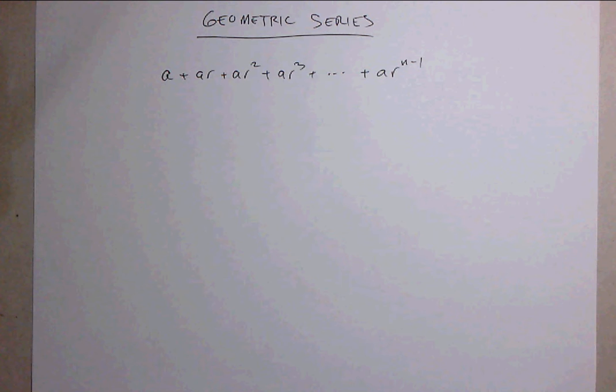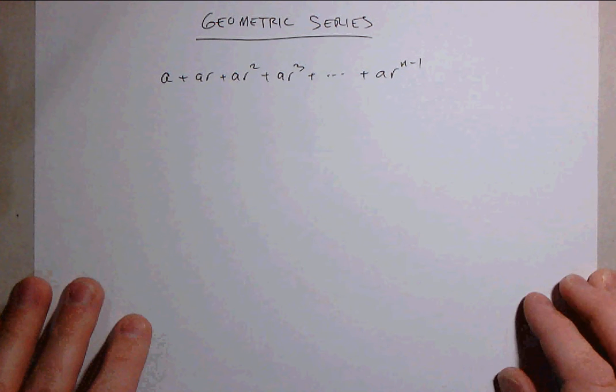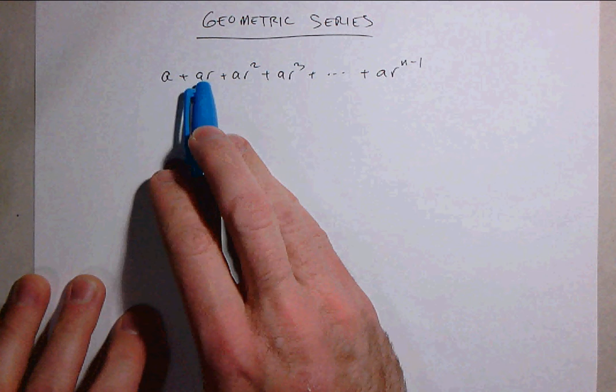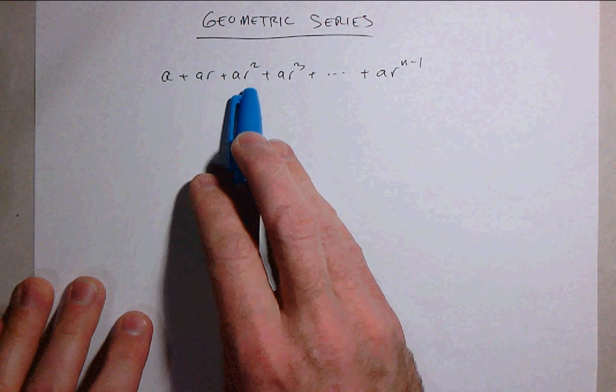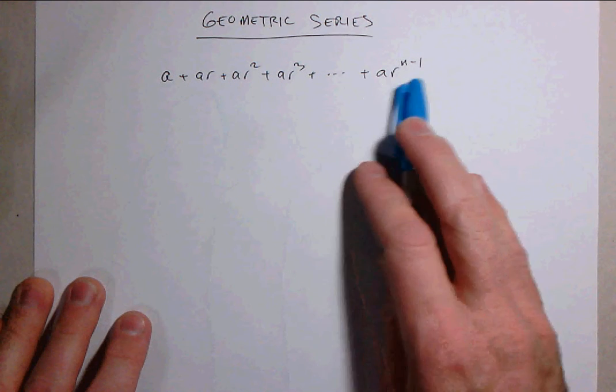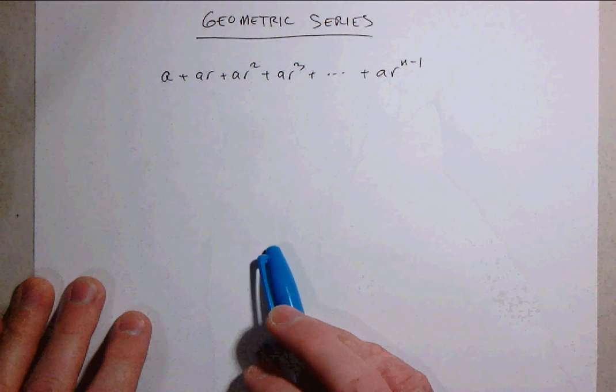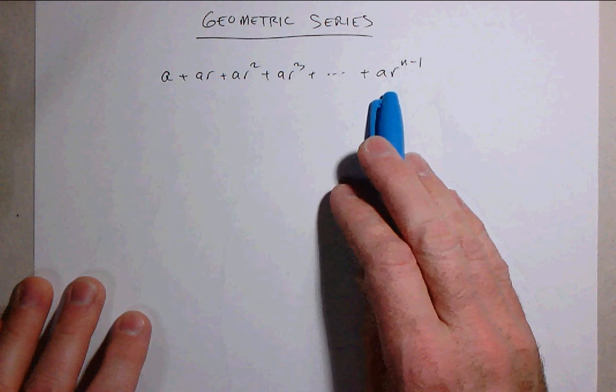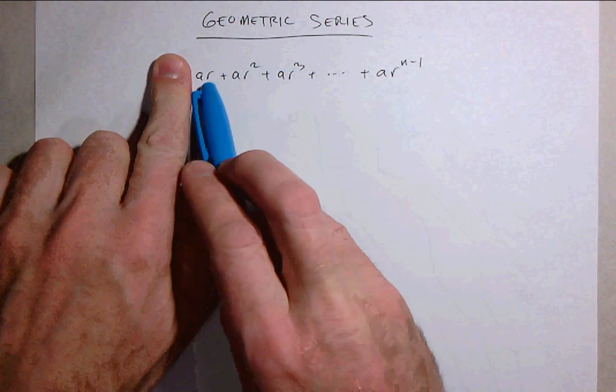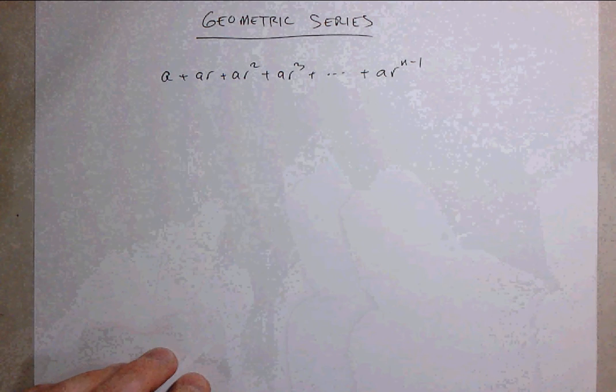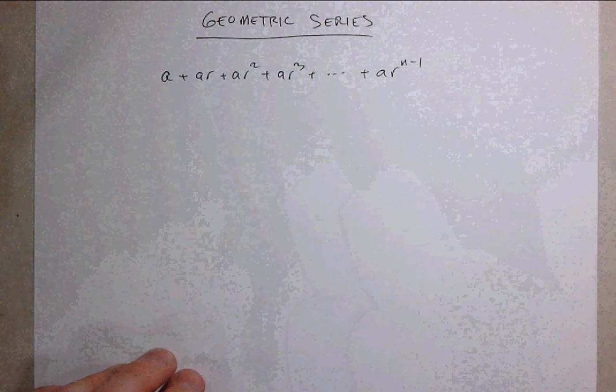So here we have essentially every finite geometric series. We start at a, we multiply by the common ratio to get the next term, multiply by the common ratio again to get the next term, and so on. All the way out to this final term in the series a times r to the n minus 1. Notice that this series has n terms in it. The n minus 1 terms with the r's and then of course the first term where r is raised to the zero power essentially.